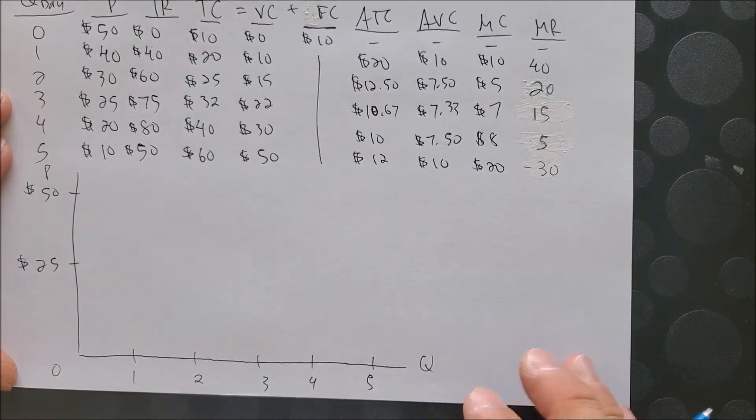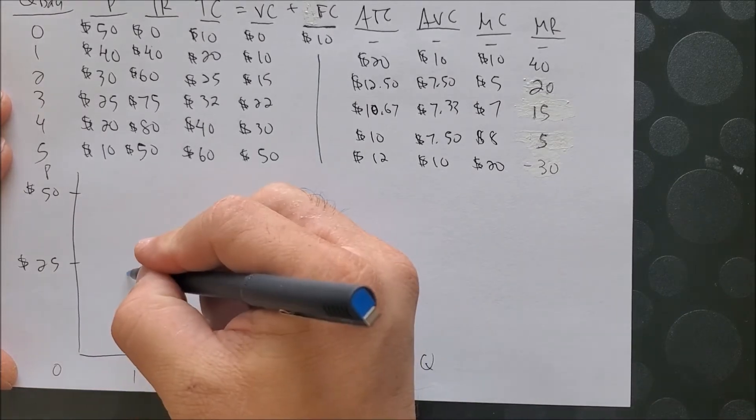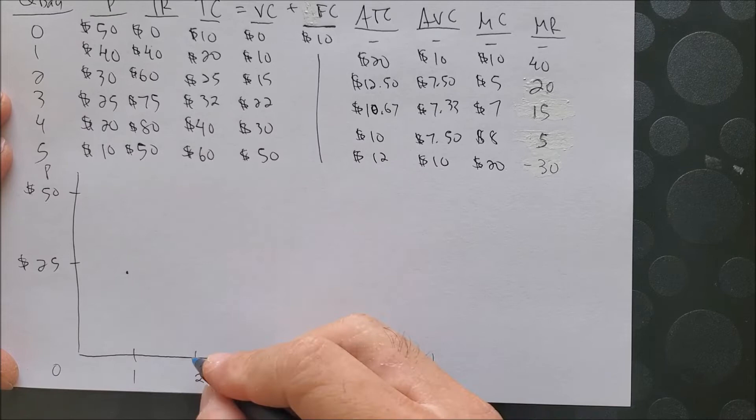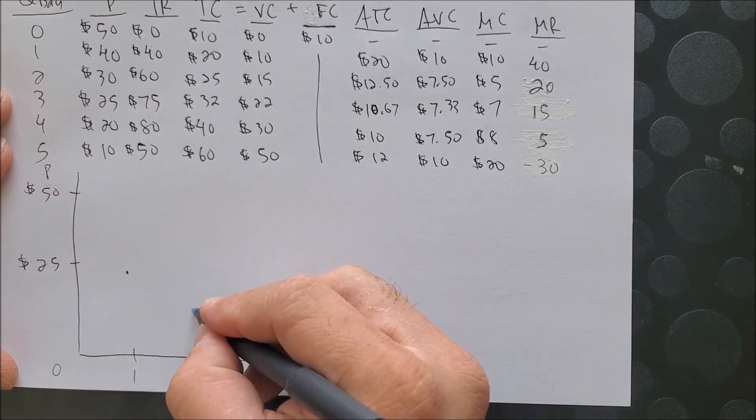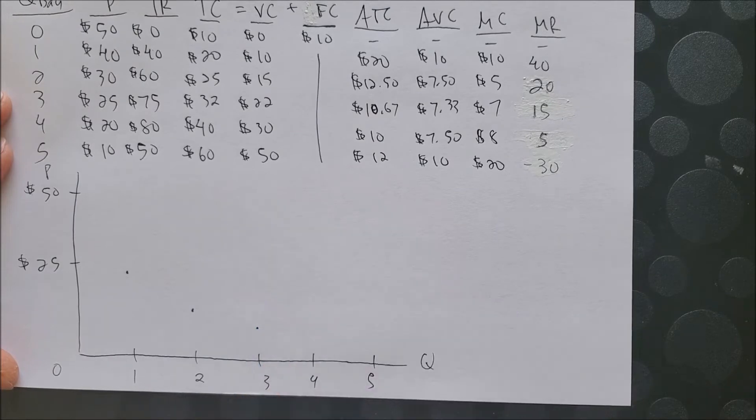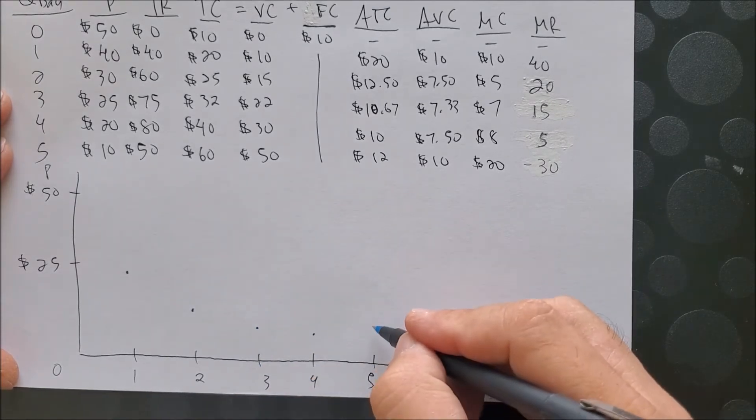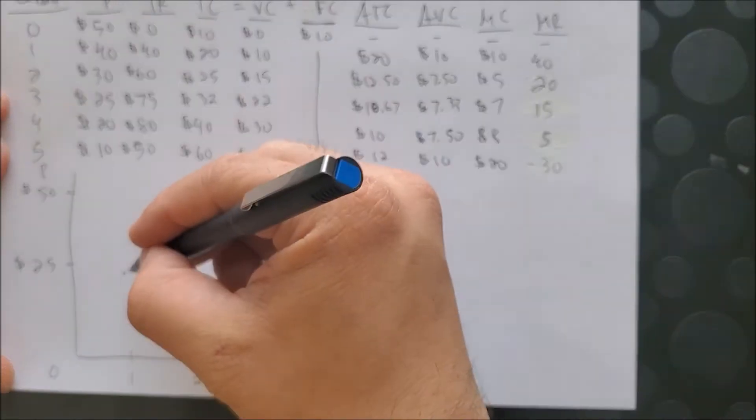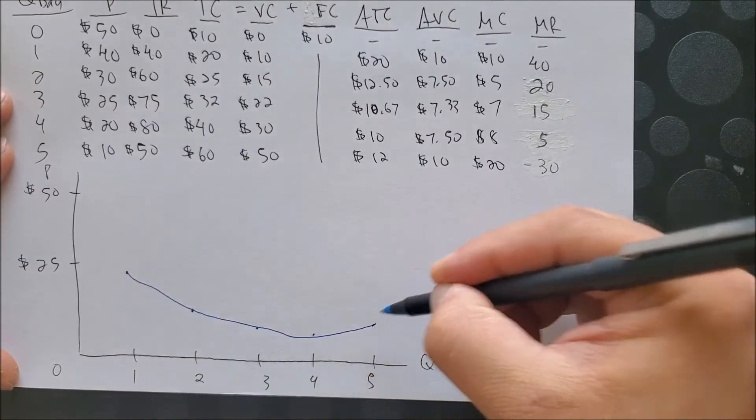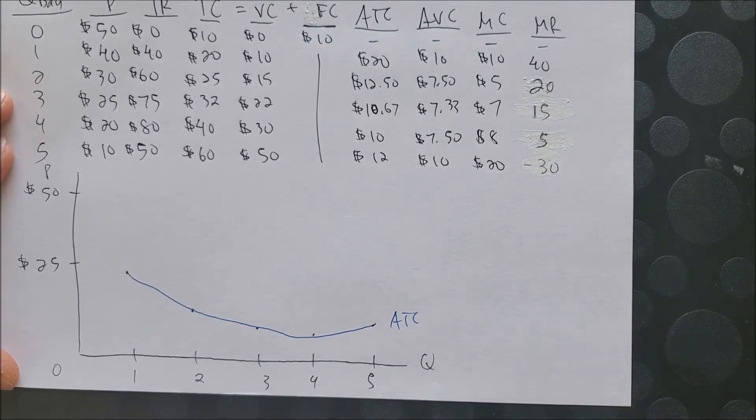Now here we have ATC, I'll be using a blue pen. 1, 20; 2, 12.50; 3, 10.67; 4, 10; and 5, 12. And here we have, once again, our average total costs labeled ATC.